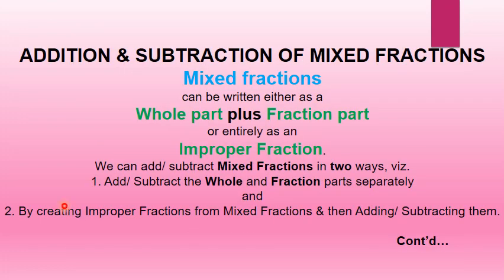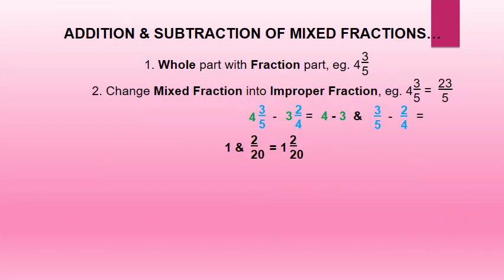Addition and subtraction of mixed fractions. Mixed fractions can be written as whole part plus fraction part, or entirely as improper fractions. We can add or subtract mixed fractions in two ways: by adding or subtracting the whole and fraction parts separately, or by converting to improper fractions first. For example, 4 whole 3 upon 5 equals 23 upon 5. And 4 whole 3 upon 5 minus 3 whole 2 upon 4 equals (4 minus 3) and (3 upon 5 minus 2 upon 4), which equals 1 and 2 upon 20.